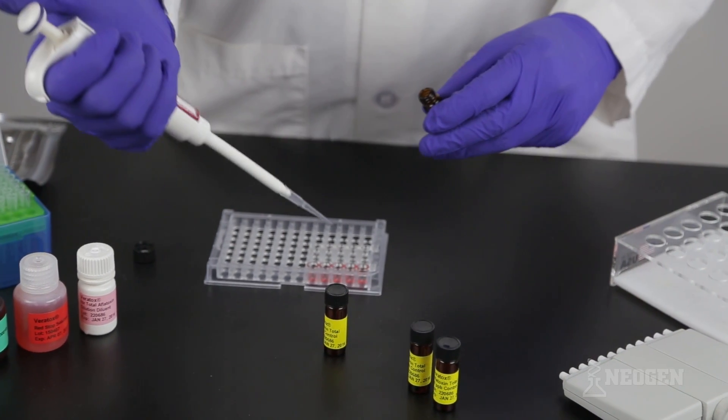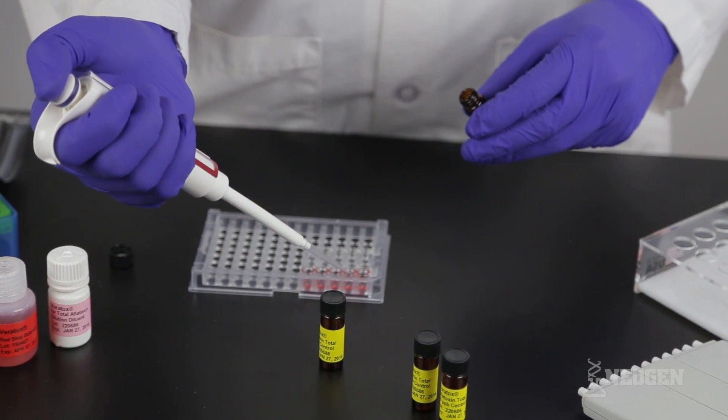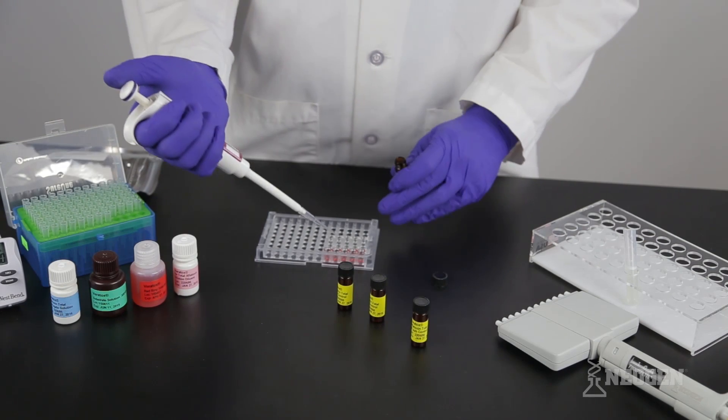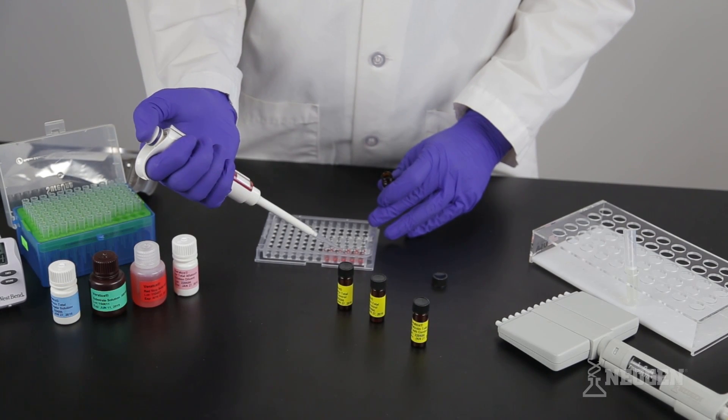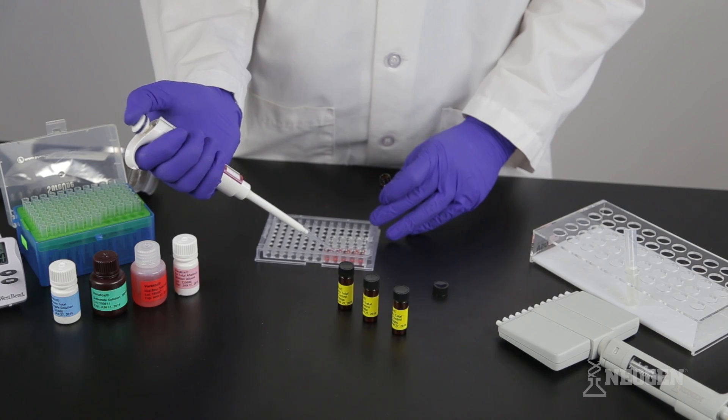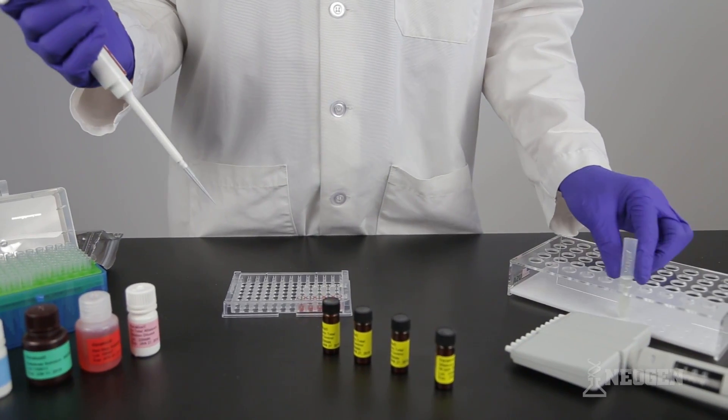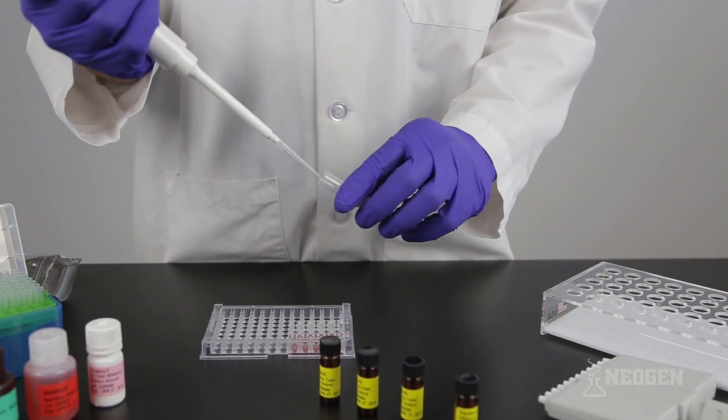Using a new tip each time, place 100 microliters of the 5, 15, and 50 ppb controls into the appropriate wells. Then, add 100 microliters of sample filtrate into the appropriate wells.